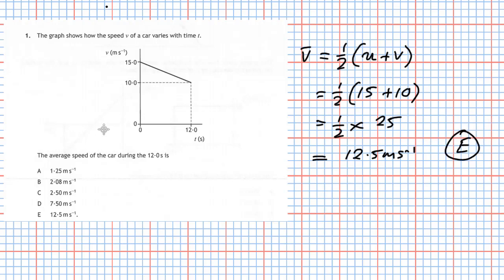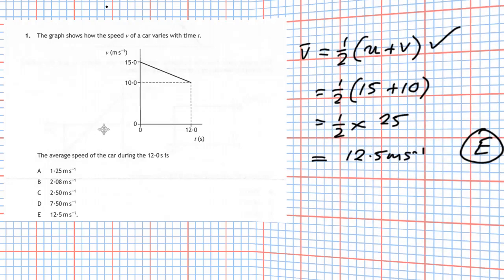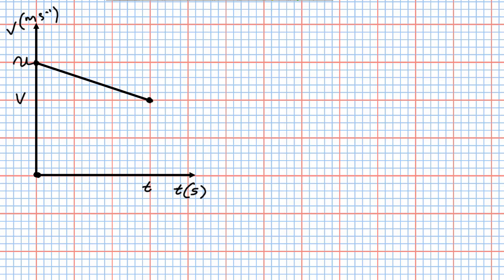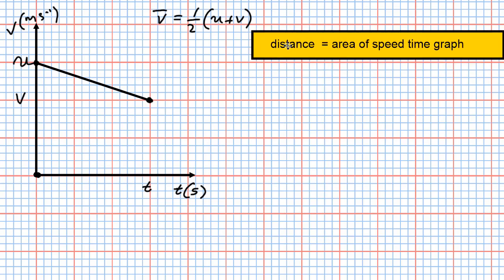Now you might be wondering why we get the formula that the average speed is one half of the starting speed plus the final speed. Using a blank graph with variable symbols, we can derive that v-bar equals one half of the starting velocity u plus the final velocity v. The key fact is that for a speed-time graph, the distance gone by the object is equal to the area under the graph.